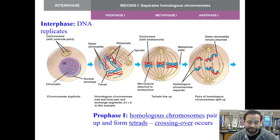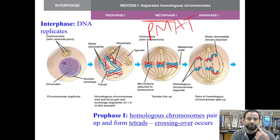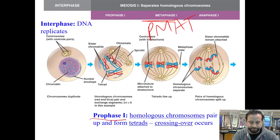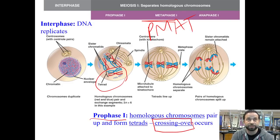Let's go over some phases of meiosis without getting into too much detail. In prophase one — remember mitosis was PMAT: prophase, metaphase, anaphase, telophase, followed by cytokinesis. In meiosis, we have the same thing except it goes through it twice. In prophase one, homologous chromosomes pair up and form tetrads. This is what we call a tetrad — a pair of homologous chromosomes paired up with each other. When they do this, something called crossing over happens. They form tetrads and actually start to exchange information with each other.